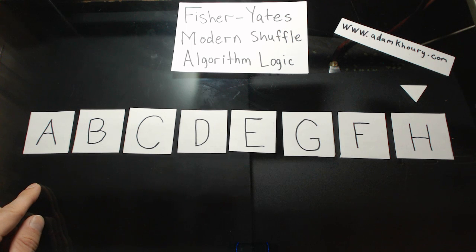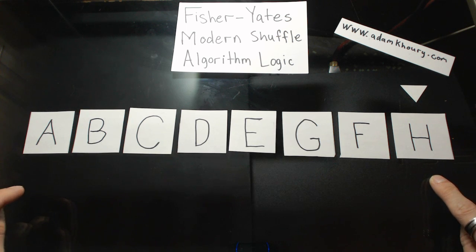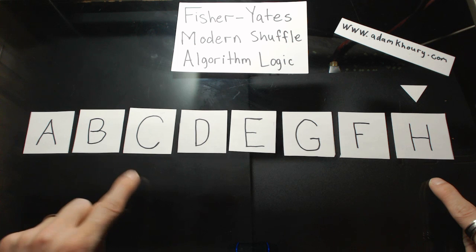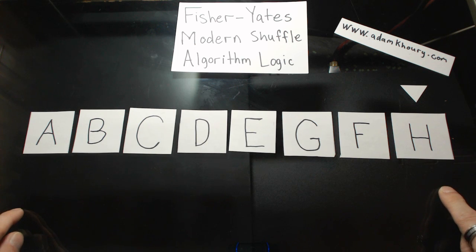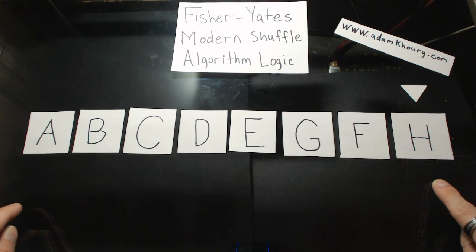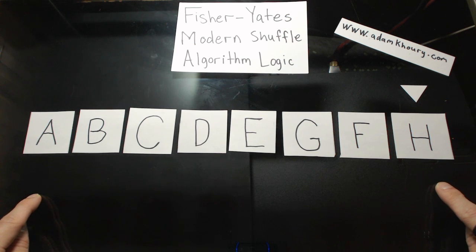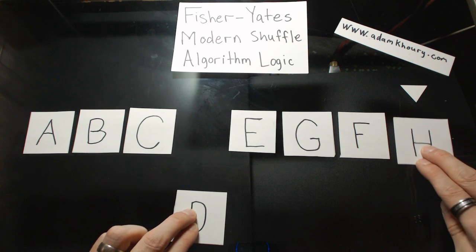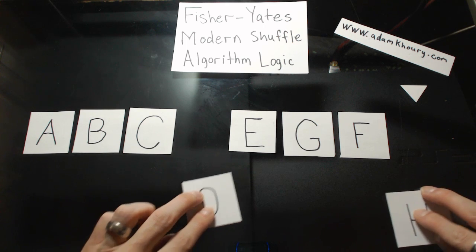So what happens is the first pass of the loop, we're going to affect index position seven. Because as most of you know, all arrays start with an index position of zero — so we have positions zero through seven. In the first pass of the loop, we generate a random number between zero and seven. Let's say that random number happens to be a three. So we go to index position three, and we swap this value for the value at index position seven.